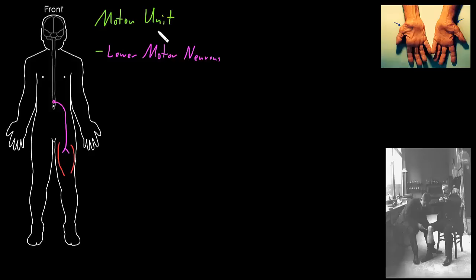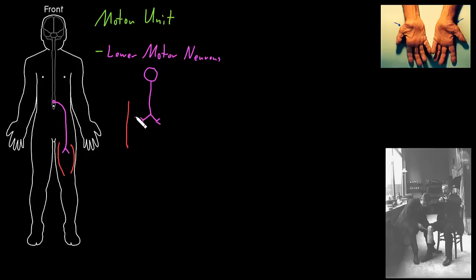The term motor unit refers to one lower motor neuron. Let me just draw a soma and an axon coming out of this lower motor neuron, and then draw this one just having two axon terminals, although they can have lots of axon terminals. So we'll say that this lower motor neuron is contacting just two skeletal muscle cells — let me draw these two little red tubes to represent two skeletal muscle cells being contacted by this lower motor neuron.